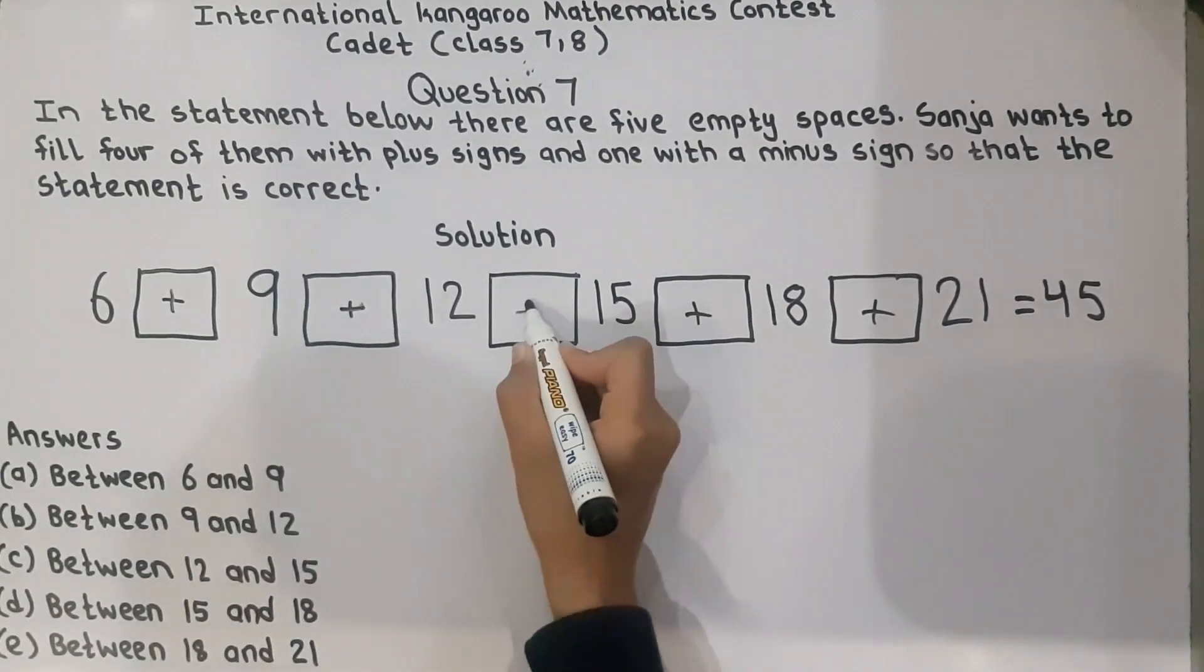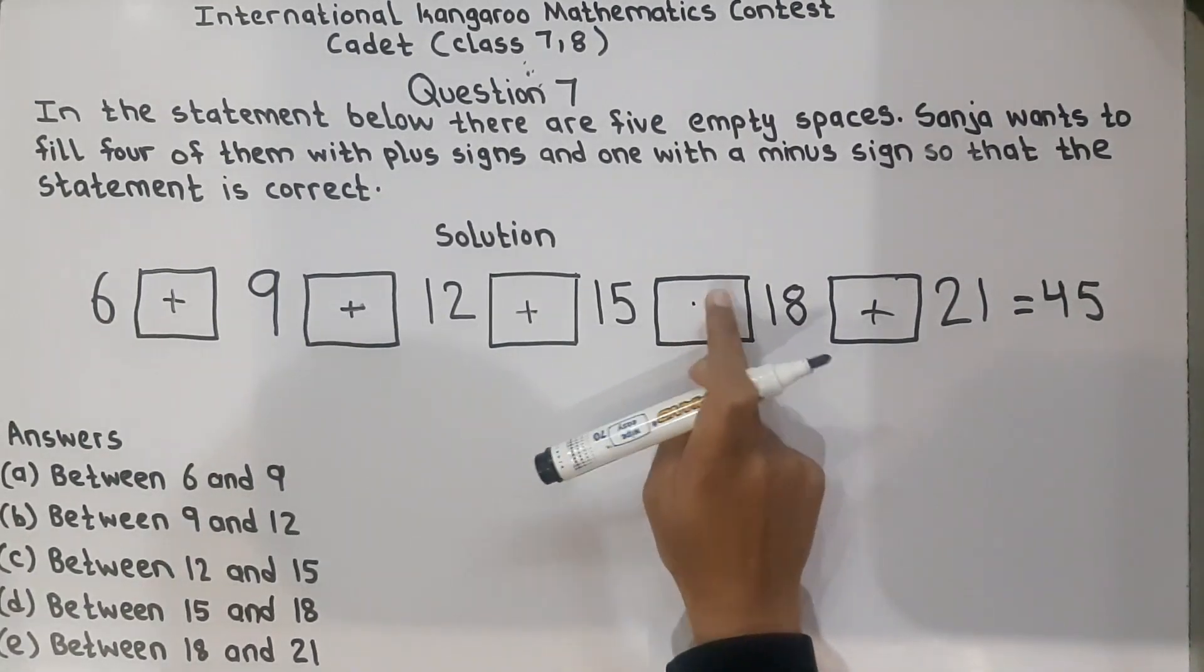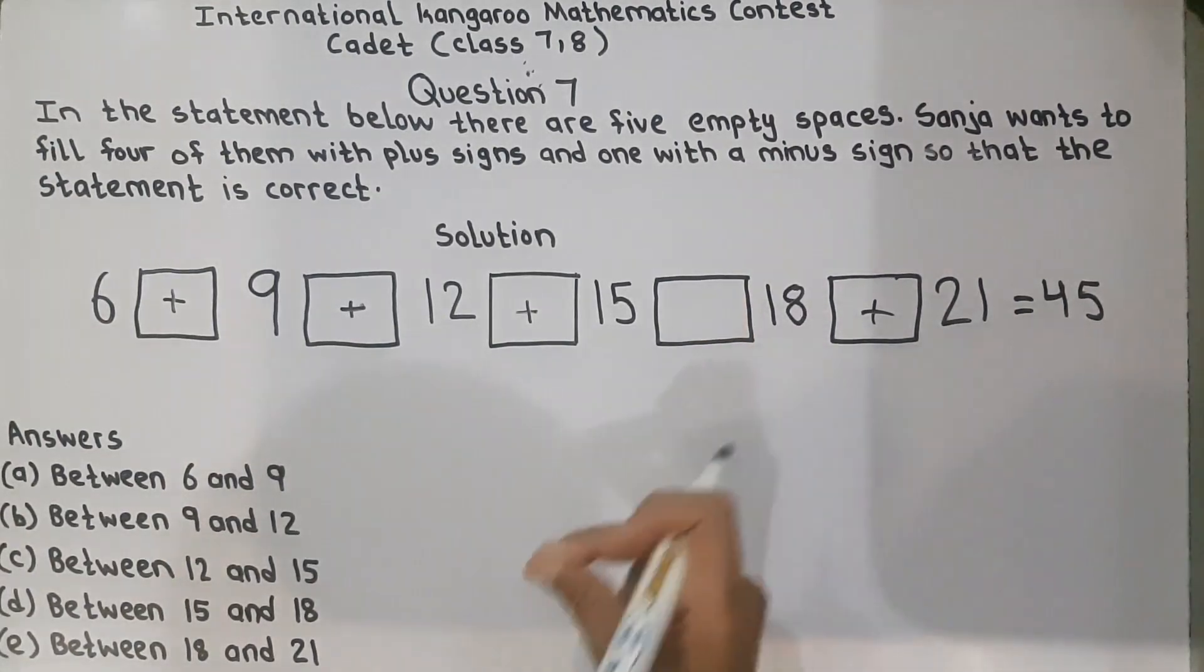So we will put plus sign here and put minus sign here to check whether this statement is true or not. 6 plus 9 equals 15, 15 plus 12 equals 27, 27 plus 15 equals 42. Now 42 minus 18 equals 24, and 24 plus 21 equals 45. So finally we have got the right answer.